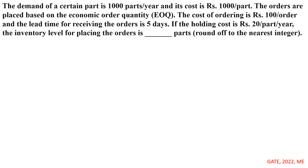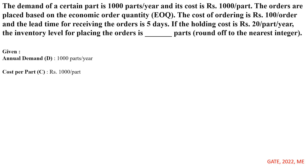Next, we will see the GATE 2022 problem. The demand of a certain pot is 1000 pots per year, and cost is 1000 rupees per pot. So annual demand D = 1000 pots per year, and cost per pot C = 1000 rupees per pot. Orders are placed based on the EOQ. The cost of ordering C₀ = 100 rupees per order, and the lead time for receiving orders is 5 days.